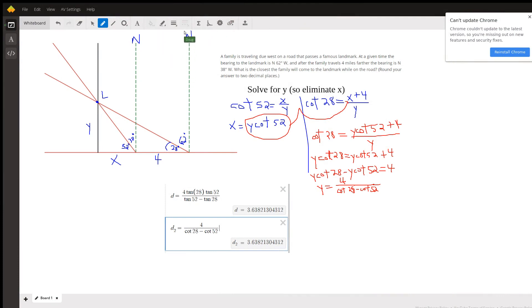Okay, here's a diagram depicting the situation. This family is located here at some given point in time. At this landmark L, if they look north from their vehicle and then 62 degrees west, they can sight the landmark. That means this angle right here is 28 degrees.